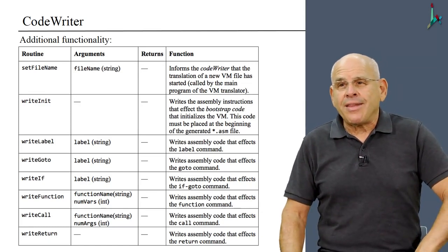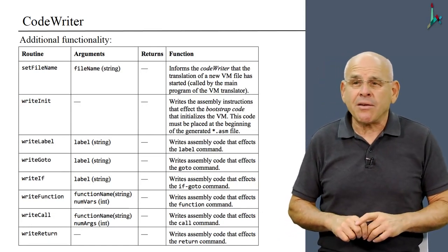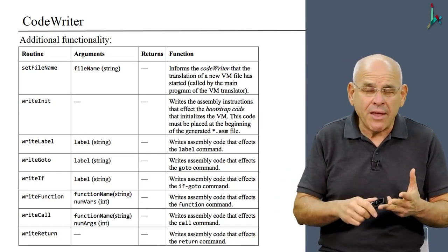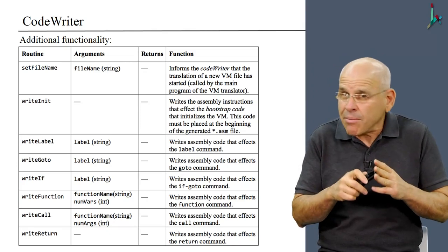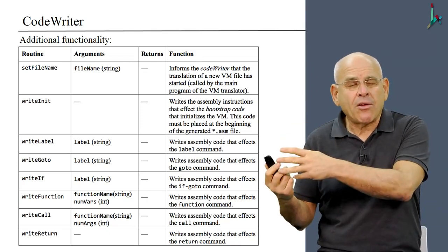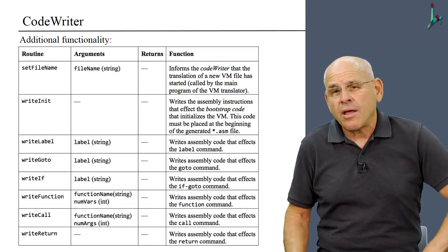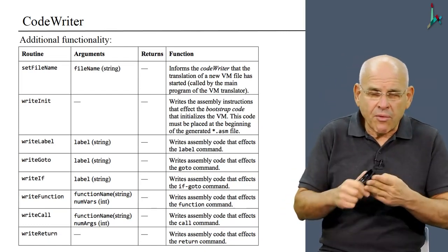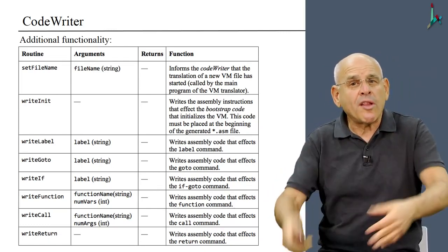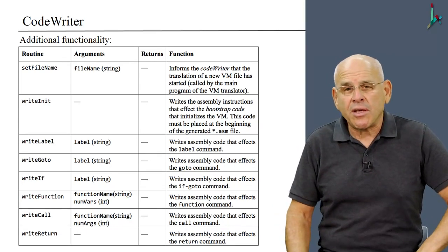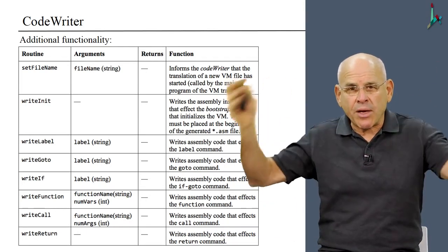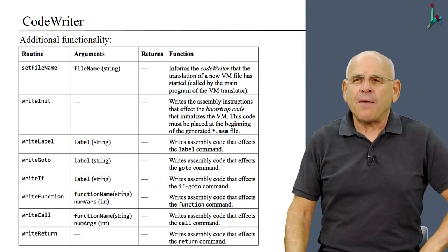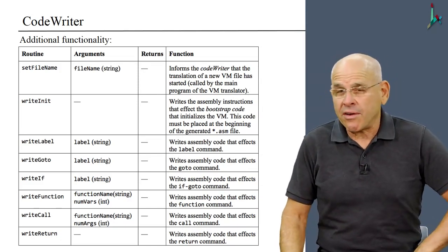Now, the most challenging part in writing this VM translator is writing these six methods: writeLabel, writeGoto, writeIf. I mean, these three methods are relatively simple because generating assembly code that implements if and go to is not a big deal. But then we have to generate the assembly code for function call and return. And in doing this, you have to follow all the logic that we explained in the previous units in order to build this incredible cathedral, the stack, which moves up and down in order to implement the function call and return protocol.